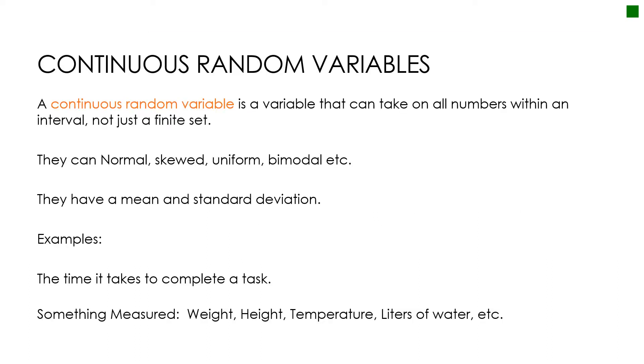A continuous random variable is a variable that can take on all of the numbers within an interval, not just a finite set where I can list that I can flip a heads or tails or roll a 1, 2, 3, 4, 5, or 6, but I'm looking at something that can take on all of the values between any two other numbers.